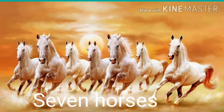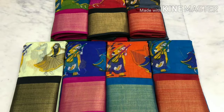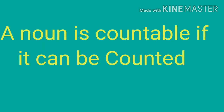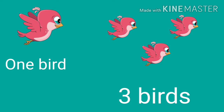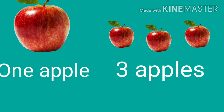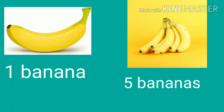Here, seven horses are running in the field. These horses we can count — we can say seven horses. There are seven series on the floor. A noun is countable if it can be counted, like one bird, three birds. Countable nouns can be both singular and plural: one bird, three birds; one apple, three apples; one banana, five bananas.